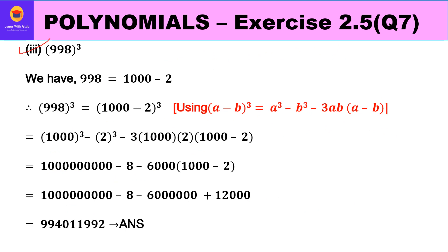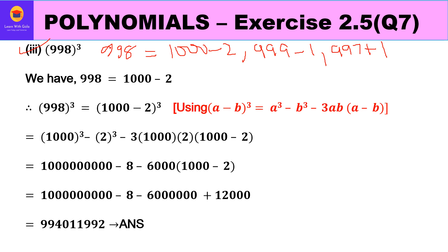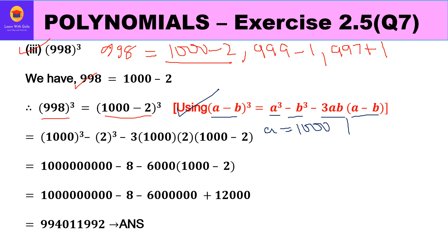In the third part we have 998 cubed. 998 can be written in many forms: 1000 minus 2, or 999 minus 1, or 997 plus 1. The best is to write it in multiples of tens, hundreds, or thousands, so the most appropriate form is 1000 minus 2. So 998³ = (1000 - 2)³. We shall use the identity (a - b)³ = a³ - b³ - 3ab(a - b), where a is 1000 and b is 2.